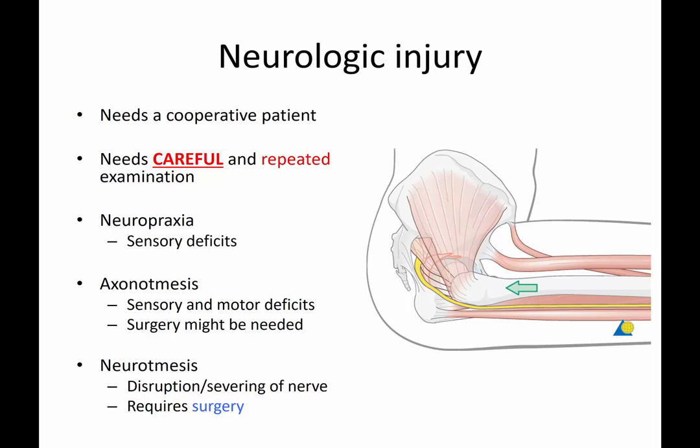Neurologic injury can occur with fractures, and to assess it you need a cooperative patient and careful, repeated examination. There are three degrees of nerve injury described by the Seddon classification. The first grade is neuropraxia, often from a stretch or compression type injury, which can cause sensory deficits and frequently recovers.